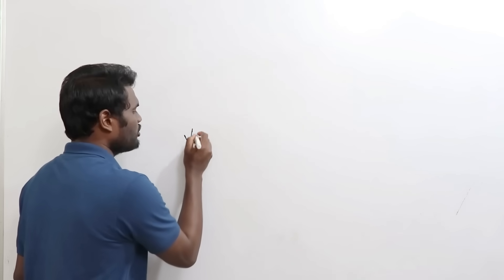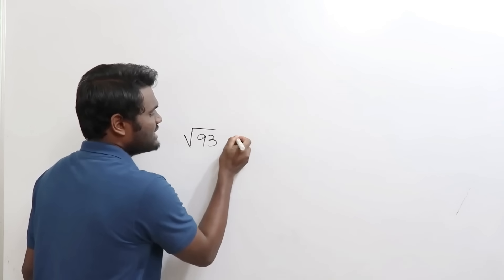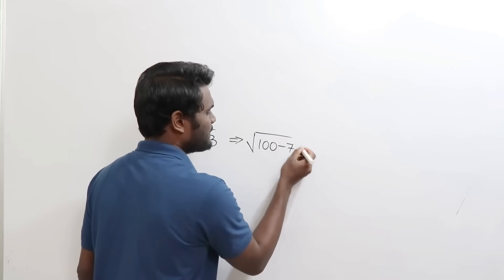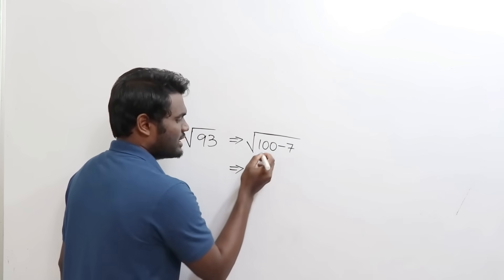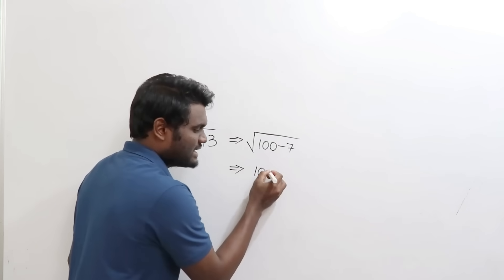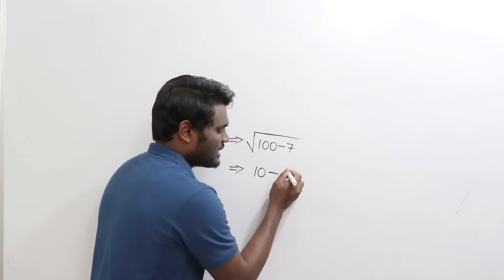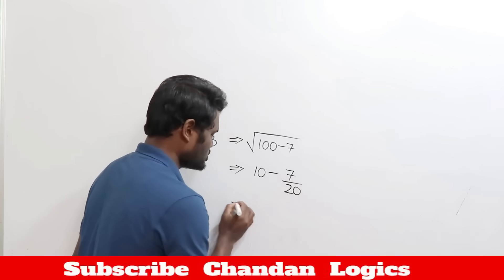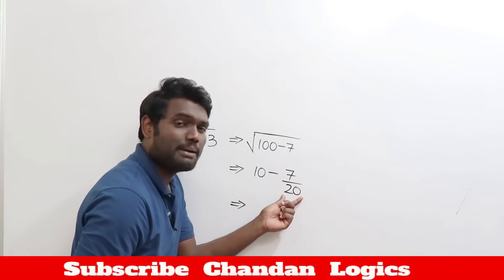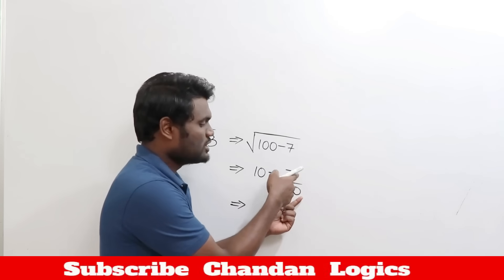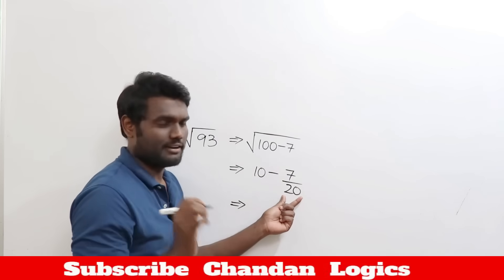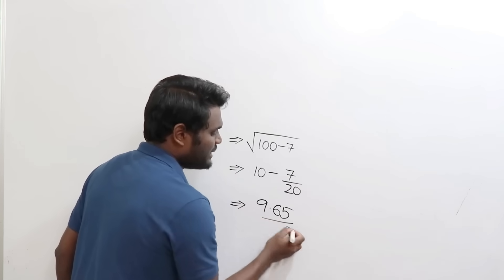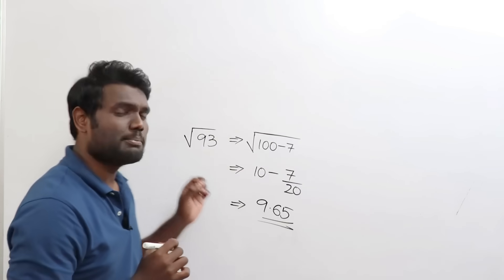Let us calculate square root of 93. Write 93 in terms of 100: this gives 100 minus 7. Square root of 100 is 10. As it is minus, write minus. Write 7 divided by double of 10, which is 20. 7/20 — multiply by 5 to get 35/100 = 0.35. So 10 minus 0.35 gives 9.65. Square root of 93 ≈ 9.65.